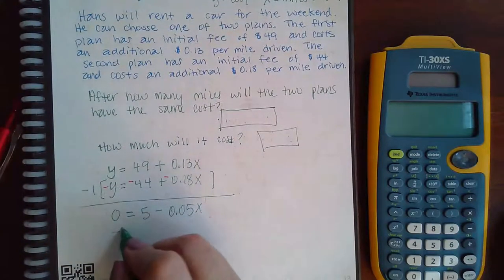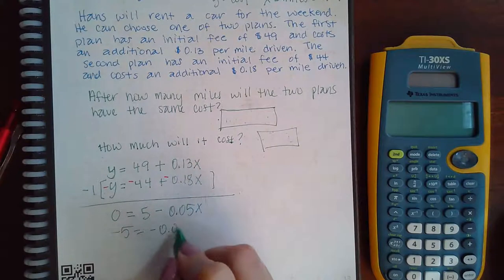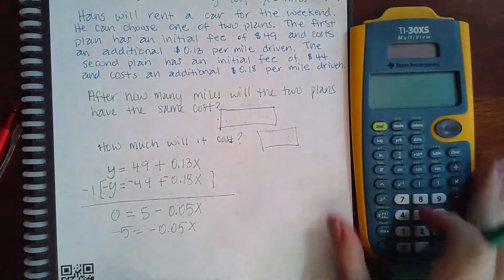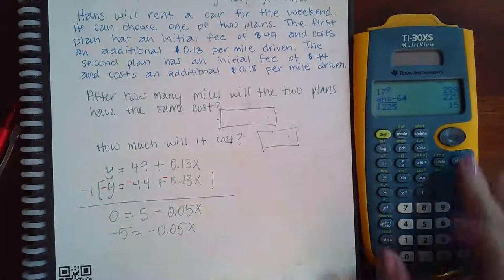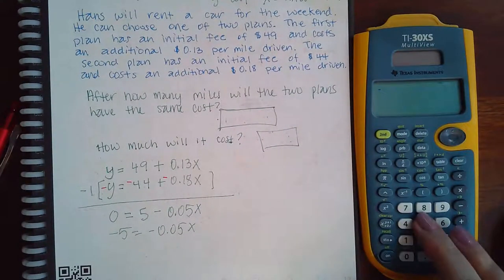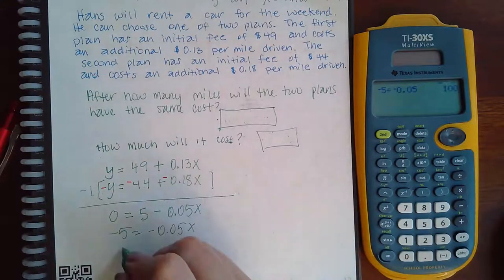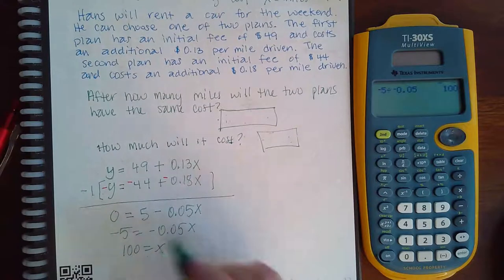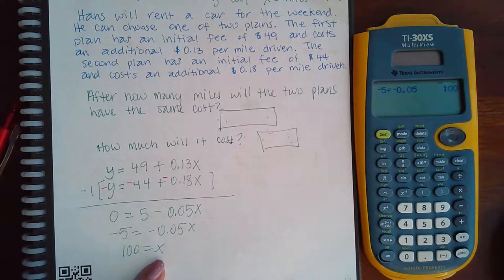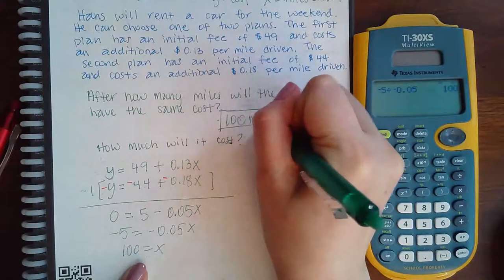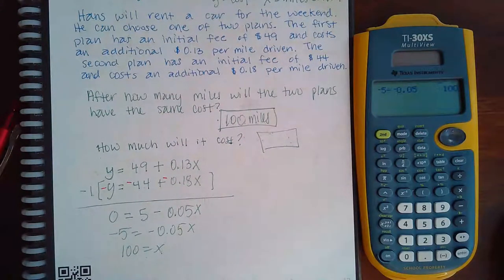I can minus 5 on both sides and then divide by negative 0.05. So negative 5 divided by negative 0.05 is 100. So x is the miles driven. So it will have to drive 100 miles before the two plans will cost the same.